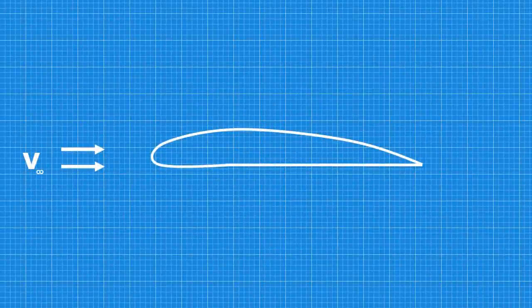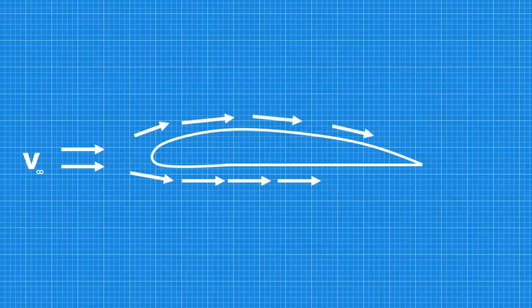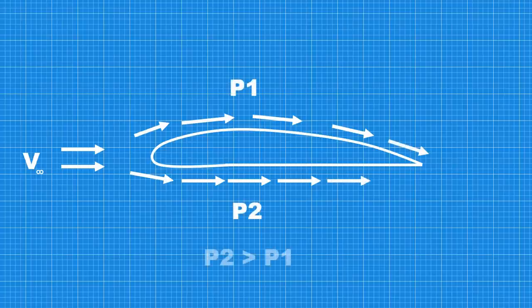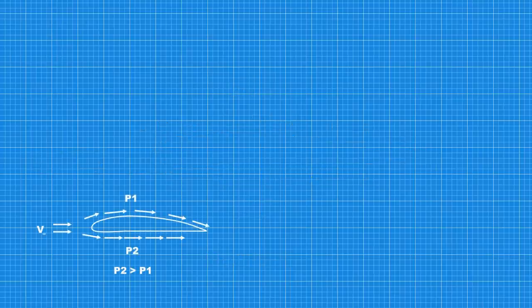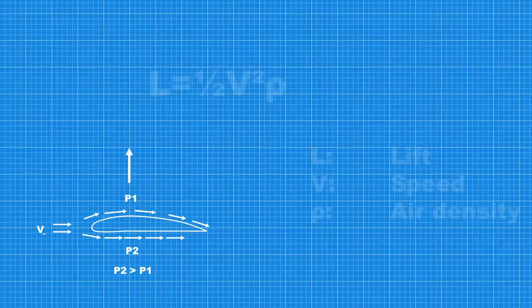Wings produce lift because their section is shaped like an aerofoil. The airflow around the aerofoil has a lower pressure on the upper side than the lower side, and this produces lift. The amount of lift produced depends on the speed, the air density, the wing surface, and the lift coefficient — which is a property of the aerofoil — as well as the angle of attack of the wing.